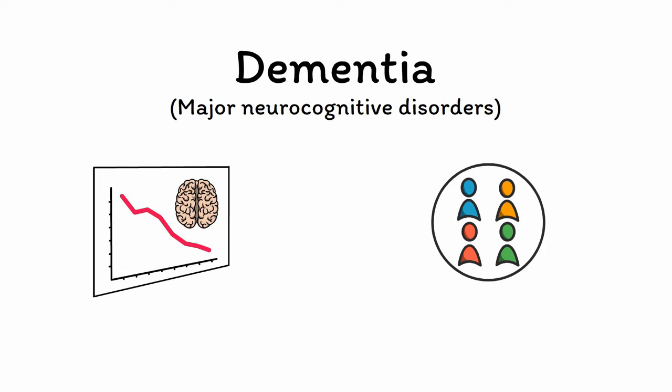Because dementia is not one disease but several, diagnosing dementia is a two-step process. First, you need to determine whether dementia is present or not. If it is, then you need to determine what type of dementia it is. You can answer the first question by using the diagnostic criteria in the DSM.